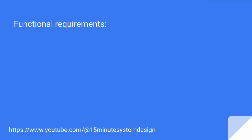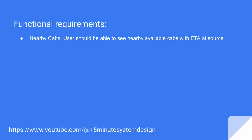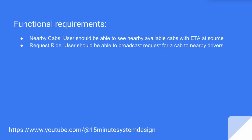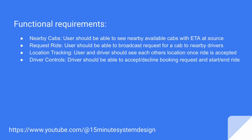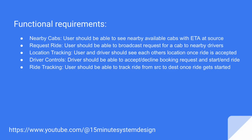Let's talk about functional requirements. The system should allow users to see nearby available cabs with ETA at source. Users should also be able to broadcast cab requests to nearby drivers. User and driver should be able to see each other's location once a ride is accepted. The driver should also be able to accept or decline a cab booking request and start and end the ride. Users should be able to track their ride from source to destination once the ride gets started.